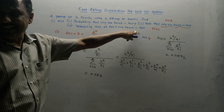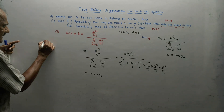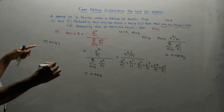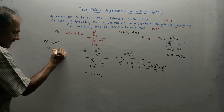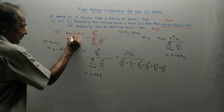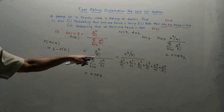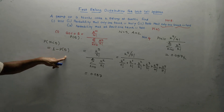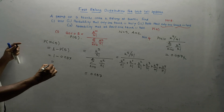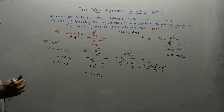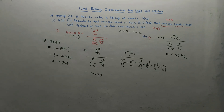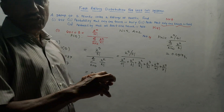For the last part: probability that at least one trunk is free means probability of n less than 5, which equals 1 minus probability of 5. Since we already calculated GOS (probability of 5) as 0.037 in the first part, at least one trunk free equals 1 minus 0.037, which gives 0.967. This is how you use the Erlang distribution formula to solve numericals. That's it for today's session — thank you for watching.